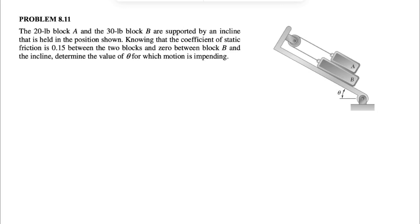Alright guys, welcome back. We're going to be solving question 11 from chapter 8 of the Barrett-Johnson textbook. We have a 20-pound block A and a 30-pound block B that are supported by an incline held in the position shown. The coefficient of static friction is 0.15 between the two blocks and 0 between block B and the incline.